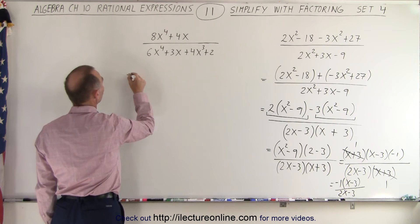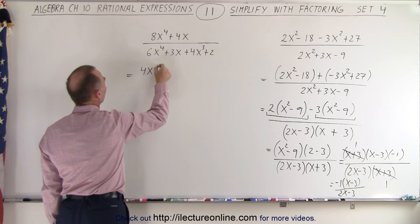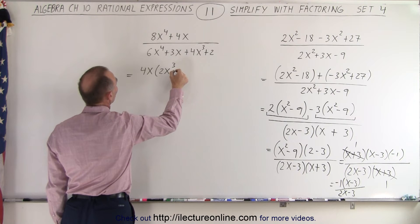We can see that in the numerator, we can factor out a 4x. And then we're left with a 2x cubed plus 1.